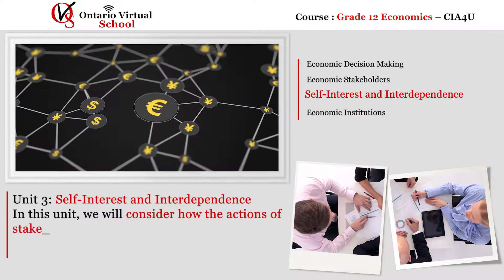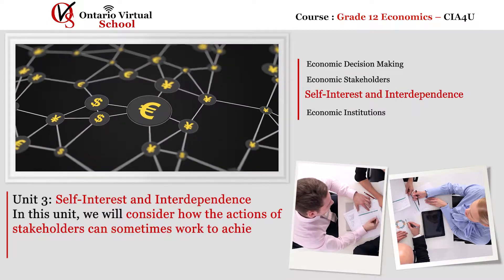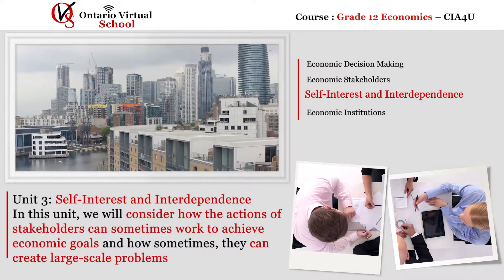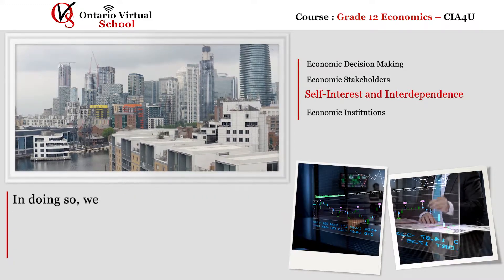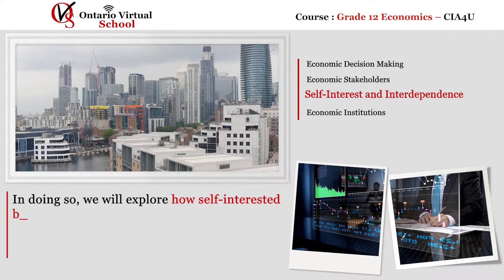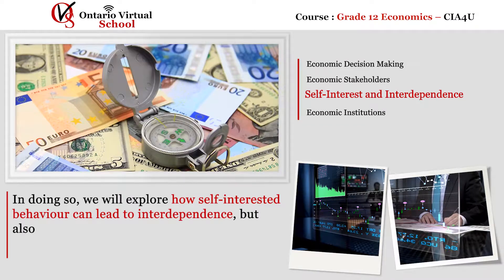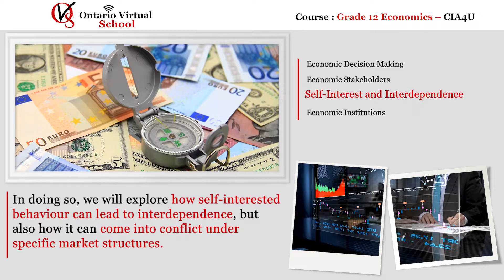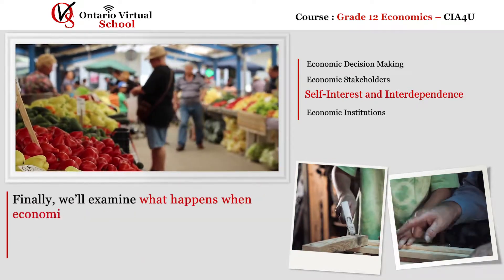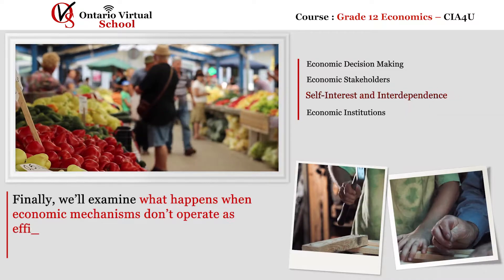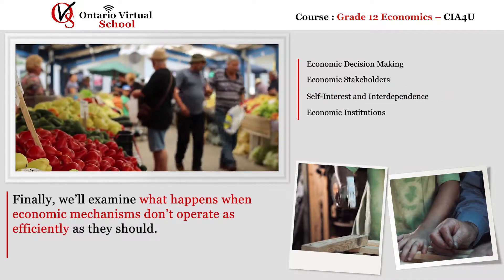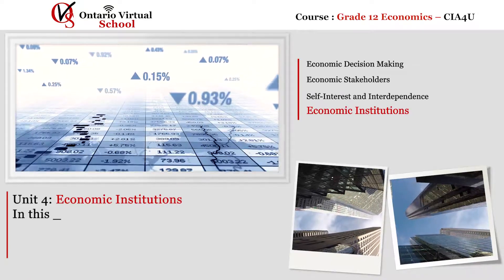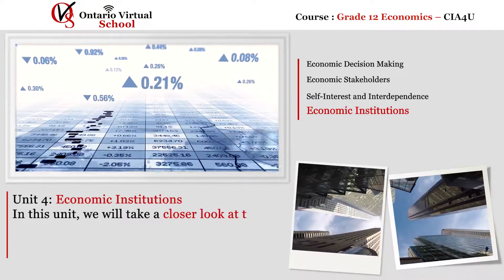Unit Three: Self-Interest and Interdependence. In this unit, we will consider how the actions of stakeholders can sometimes work to achieve economic goals and how sometimes they can create large-scale problems. We will explore how self-interested behavior can lead to interdependence but also how it can come into conflict under specific market structures. Finally, we'll examine what happens when economic mechanisms don't operate as efficiently as they should.